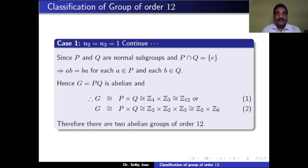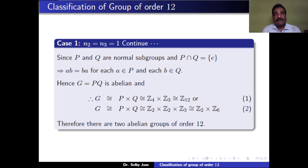Therefore G ≅ P × Q. If P ≅ Z4, then G ≅ Z4 × Z3 ≅ Z12 since gcd(4,3)=1. If P ≅ Z2 × Z2, then G ≅ Z2 × Z2 × Z3 ≅ Z2 × Z6 since Z2 × Z3 ≅ Z6. Therefore there are two abelian groups of order 12, namely Z12 and Z2 × Z6.